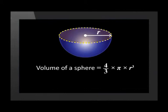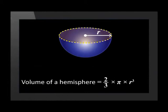If we divide this by 2 we get the volume of a hemisphere equals 2 over 3 times pi times the radius cubed.